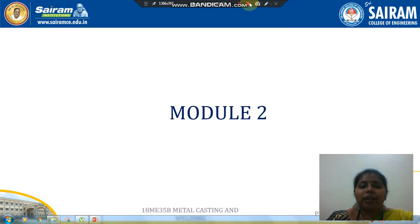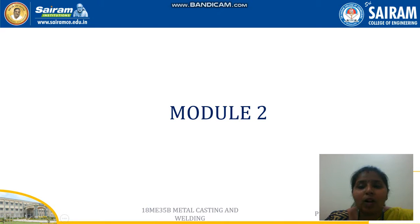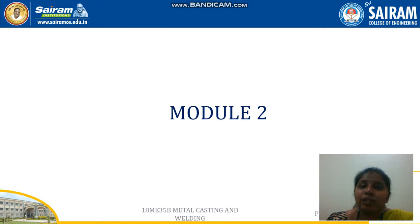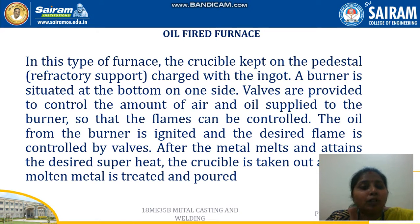Hello everyone. In this video we will be seeing about some of the types of crucible furnaces. In the previous video we saw about one classification of a crucible furnace, which is the coke-fired furnace, where with the help of coke it gets ignited and the heat produced helps in melting the raw material. In this video we are going to see about the next type of furnace based on the fuel used, that is the oil-fired furnace.